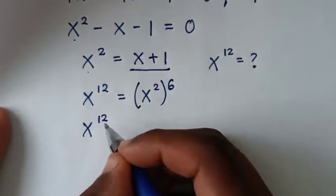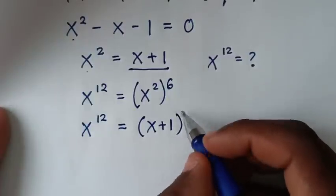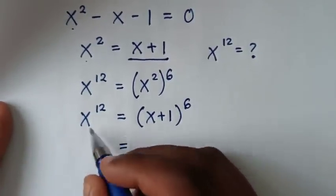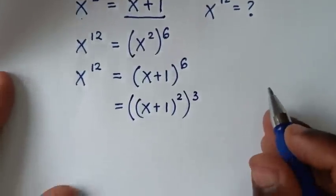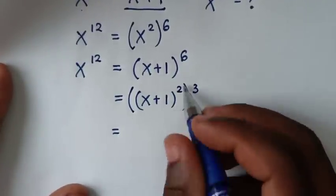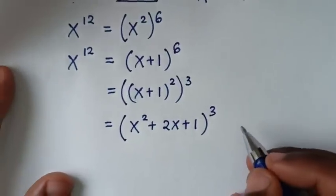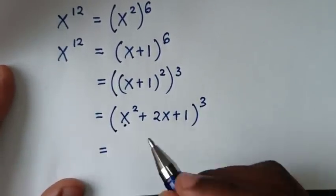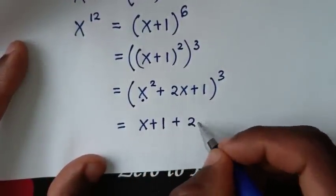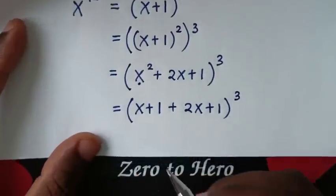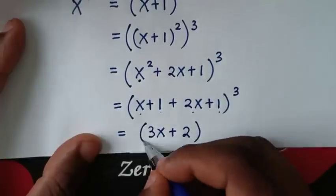So x^12 = (x + 1)^6. To expand this, we write (x + 1)^6 = [(x + 1)²]^3. The expansion of (x + 1)² is x² + 2x + 1. Substituting x² = x + 1, we get (x + 1) + 2x + 1 = 3x + 2. So x^12 = (3x + 2)^3.